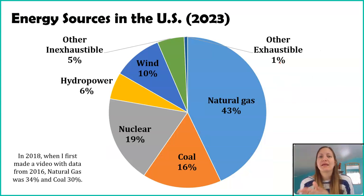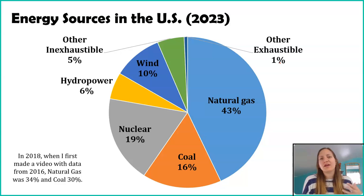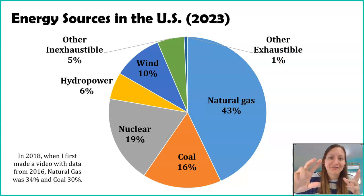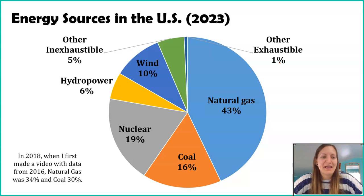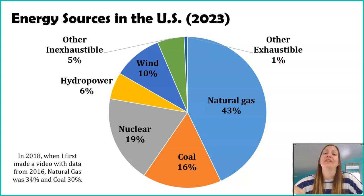Here in the United States, here is where our electricity comes from. This data is from 2023, and I have a link in the video description where this data came from. In 2018, I first made this graph using data from 2016 — so about seven years ago. Back then, natural gas fueled 34% of our electricity and coal 30%. But look at it today: natural gas is at 43% and coal is at 16%.